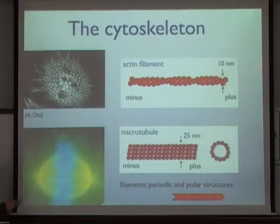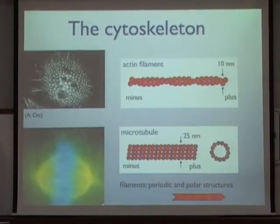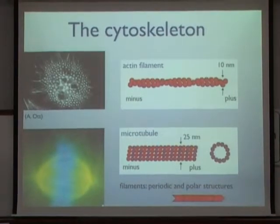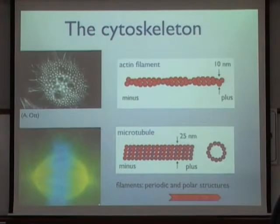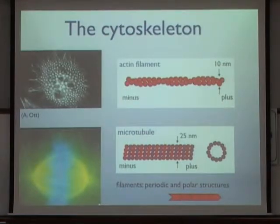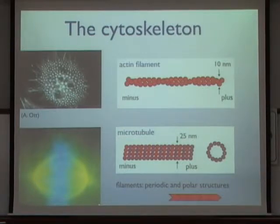Actin filaments are more flexible filaments, while microtubules are rather stiff. Microtubules are in particular involved in the mitotic spindle that physically separates chromosomes during cell division. An important feature of these filaments is their structural polarity — they have two different ends, a plus and a minus end, and this directionality is important for active processes such as motor proteins that are specialized to generate forces and movements, which get directionality from this structural asymmetry.